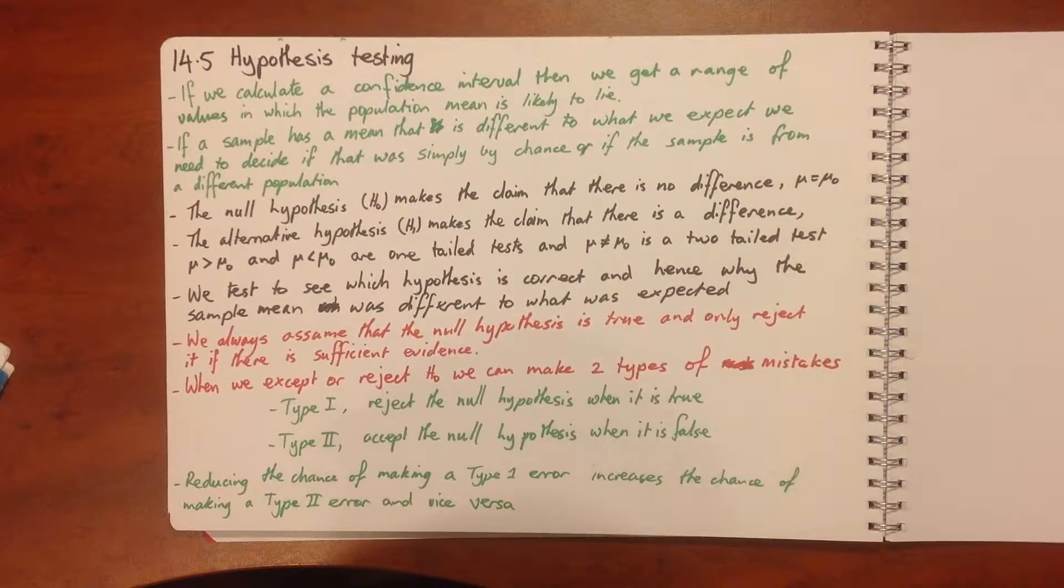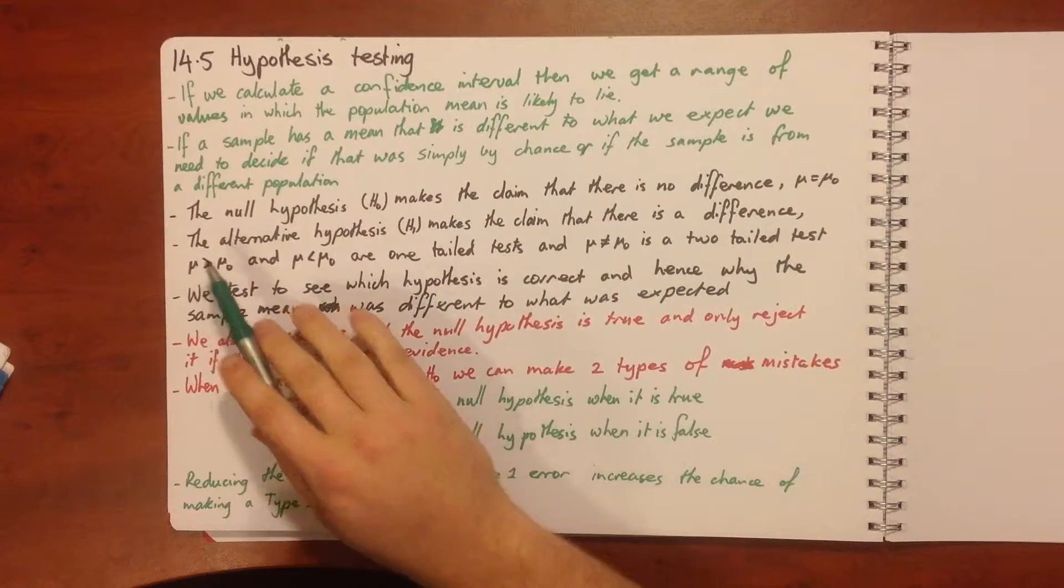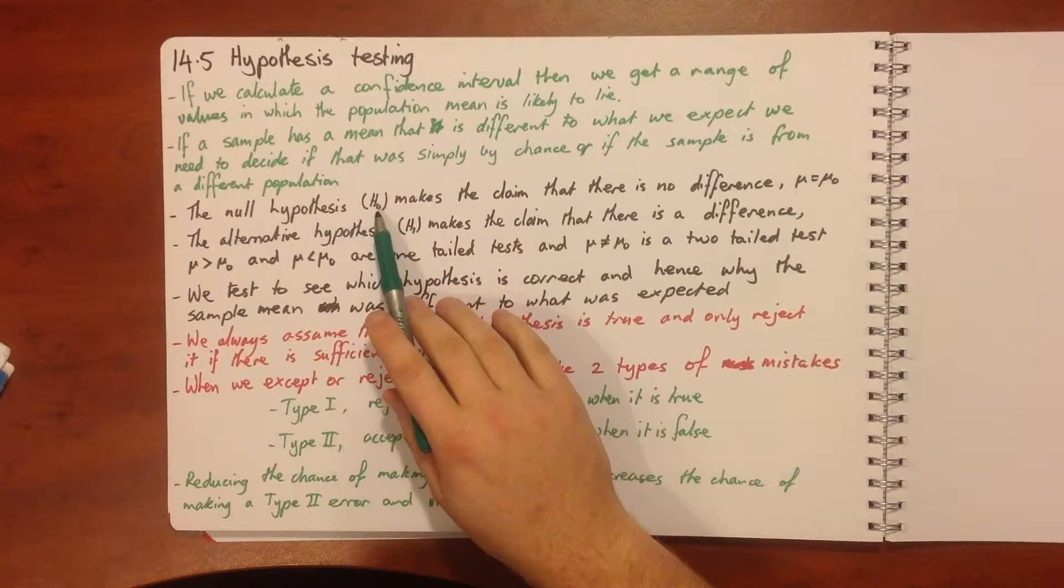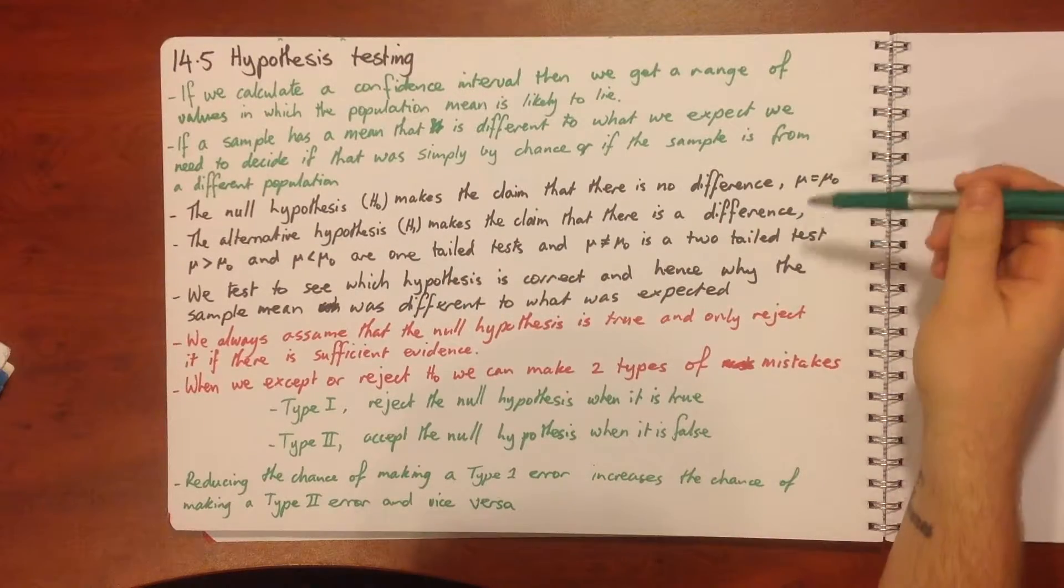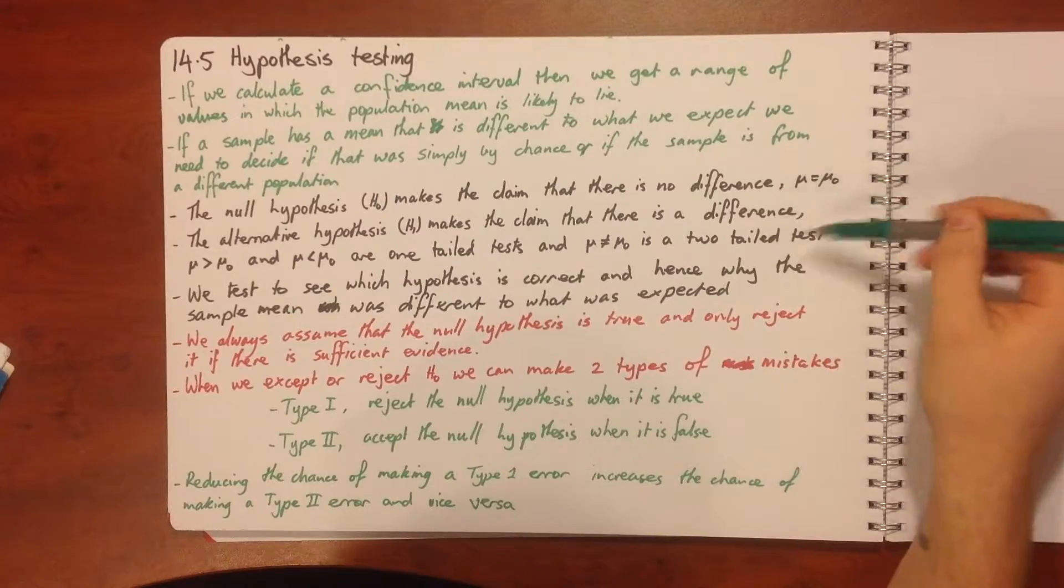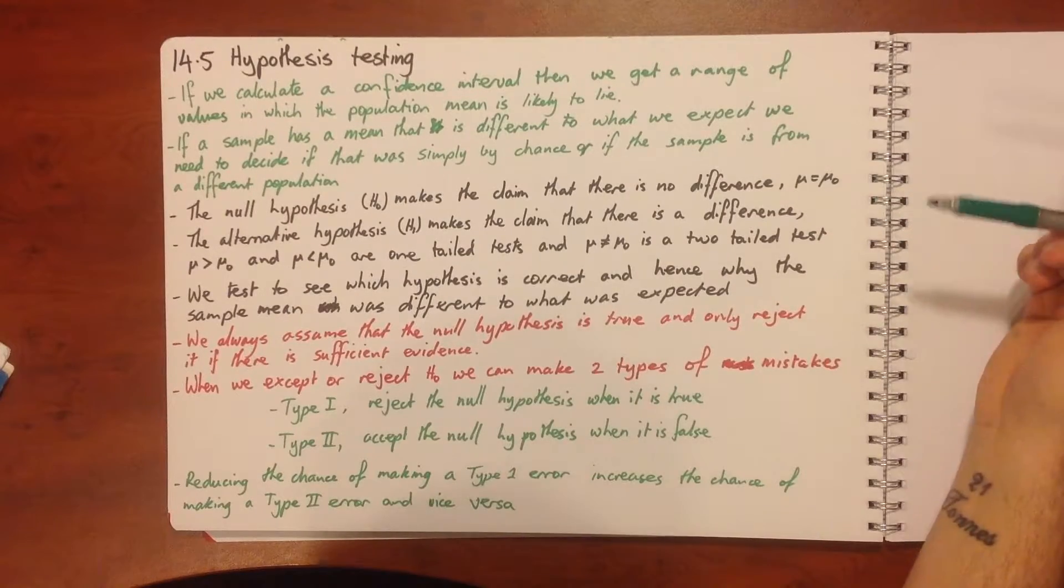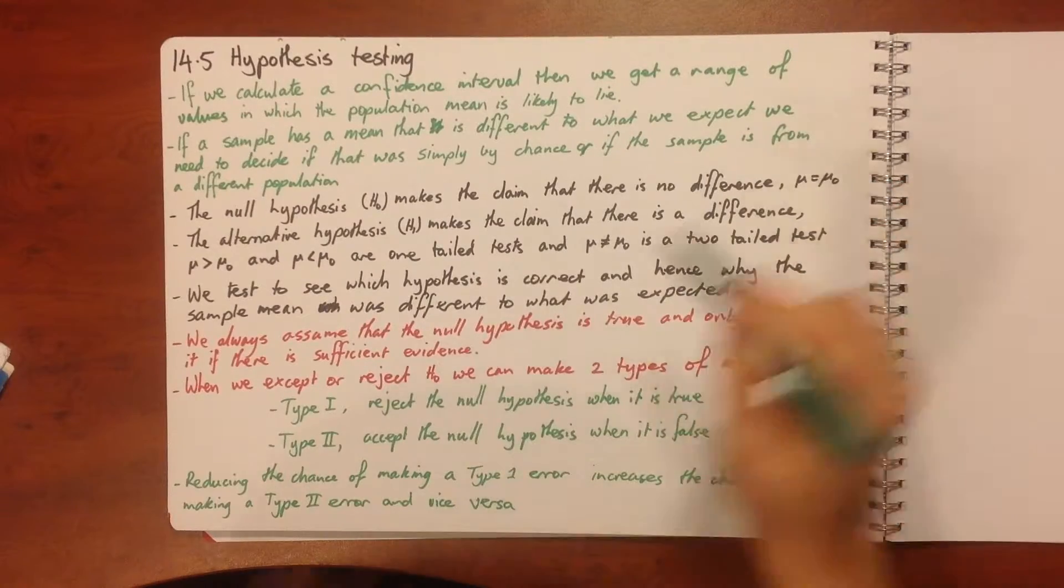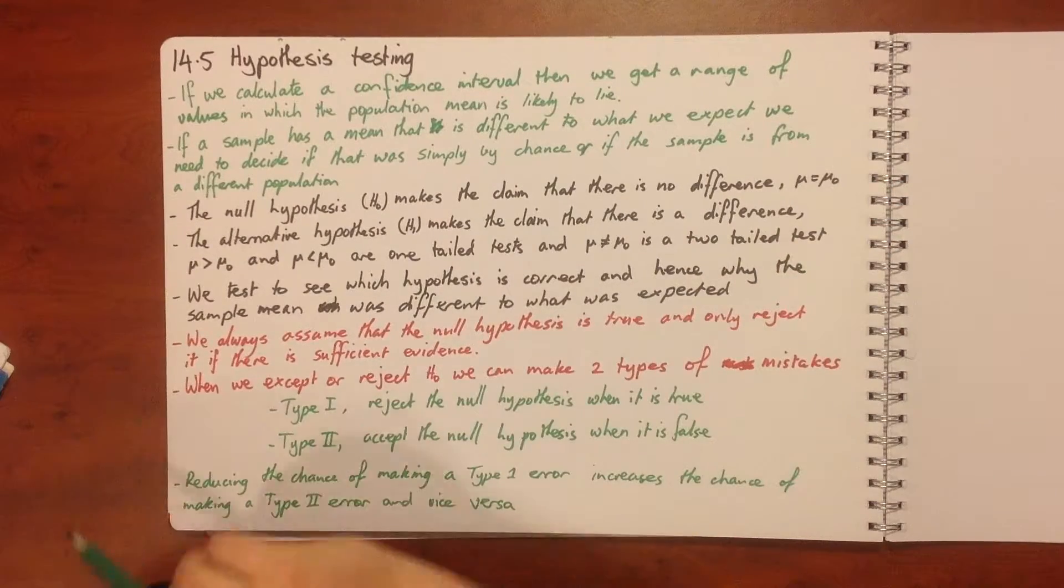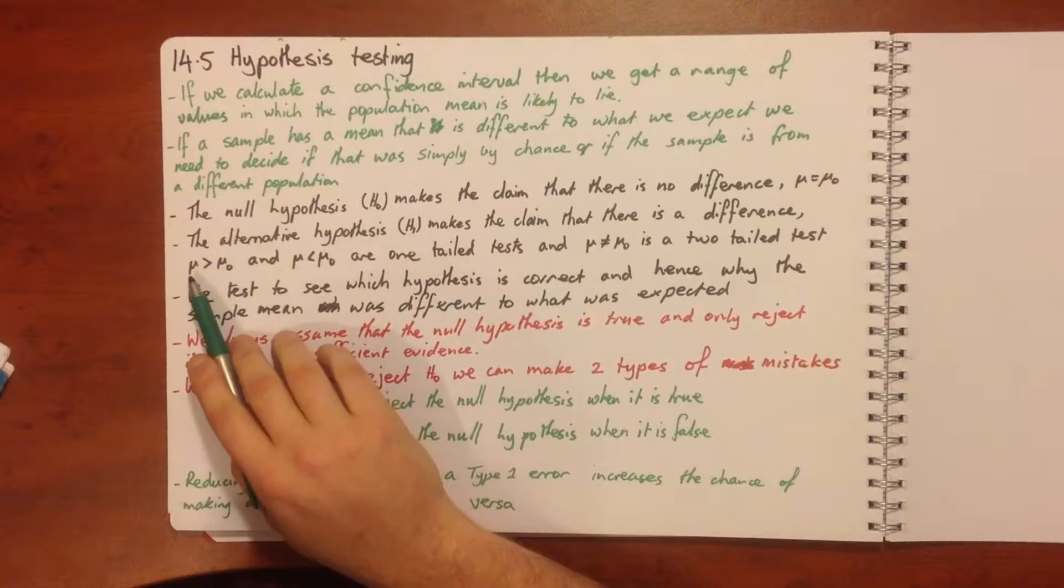So what we do is we set up some hypotheses. The null hypothesis H naught makes a claim that there is no difference, and our sample mean should fall in our range. The alternative hypothesis H1 makes a claim that there is a difference and that what we wanted is less than what we had.